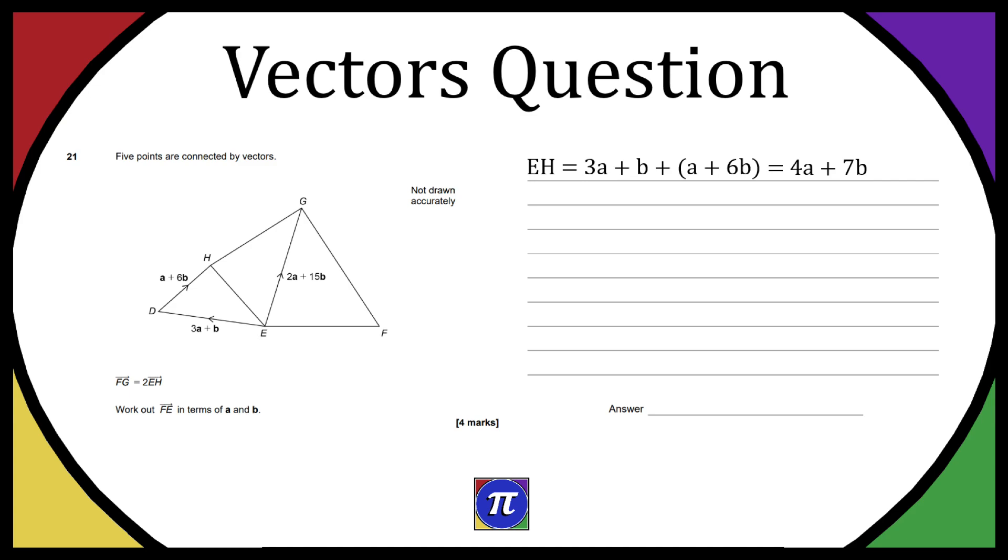Now we know as stated below, FG is actually equal to 2EH and we know what EH is now. So we can do 2 times EH and that's going to be 2 times 4A plus 7B and that's going to be equal to 8A plus 14B.